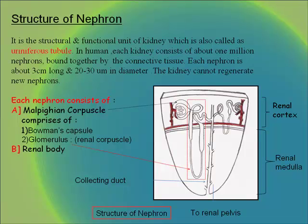The nephron is the structural and functional unit of the kidney, also called the uriniferous tubule. Each human kidney consists of about 1 million nephrons bound together by connective tissue. Each nephron is about 3 cm long and 20 to 30 micrometers in diameter, and the kidney cannot regenerate new nephrons. Each nephron consists of the Malpighian corpuscle comprising the Bowman's capsule and the glomerulus, the renal corpuscle and the renal body.